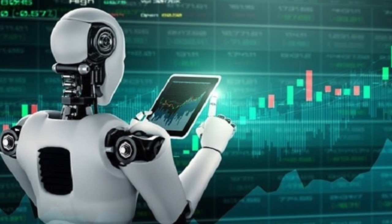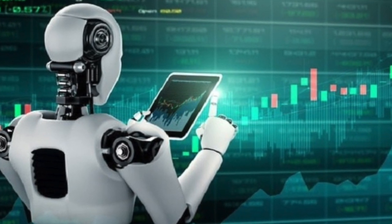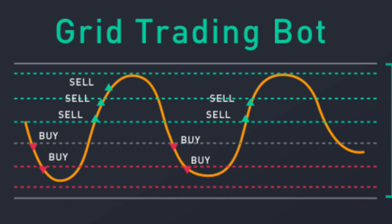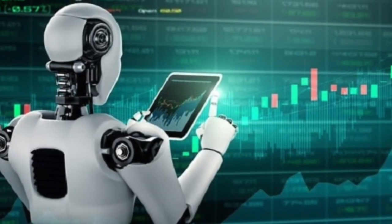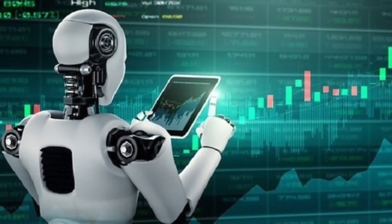When the price returns to the price range you have specified, the bot will continue trading again, as long as you haven't closed it. Apart from the upper and lower price limits, you can also specify the number of grids you want the bot to create. The number of grids means the number of times the bot should buy and sell as the price goes up and down. For example, if you choose two grids, the bot will buy once and sell once every time the price moves up and down within the price range.